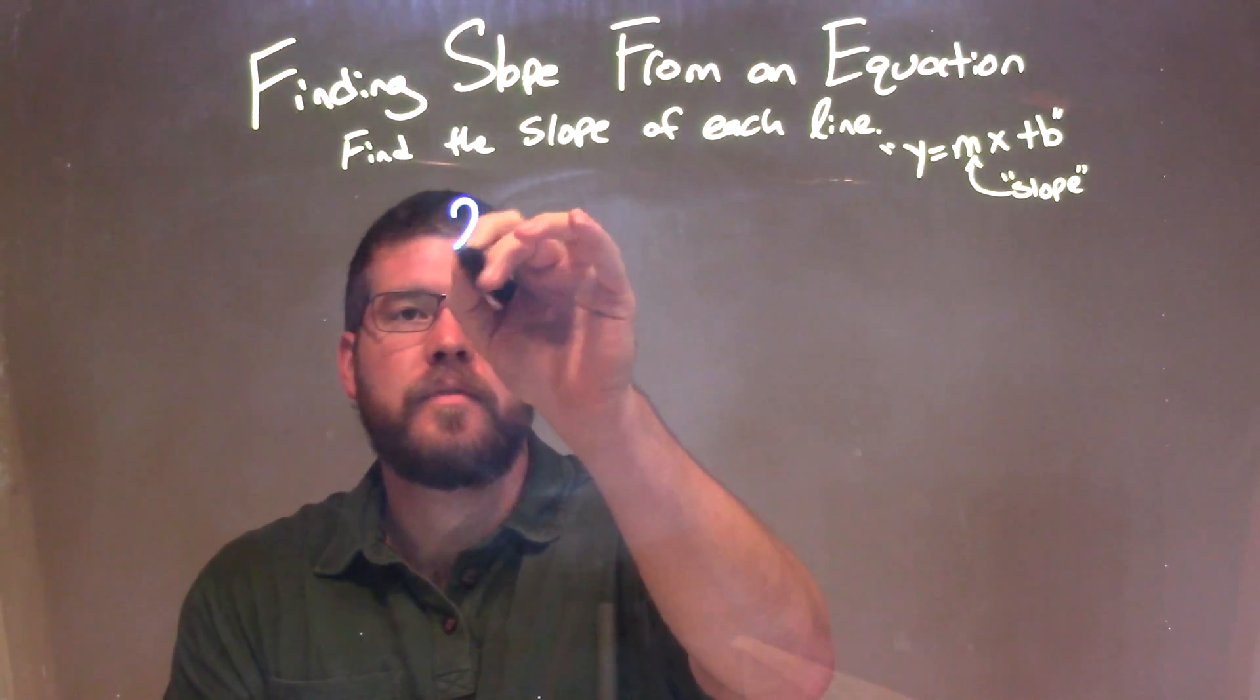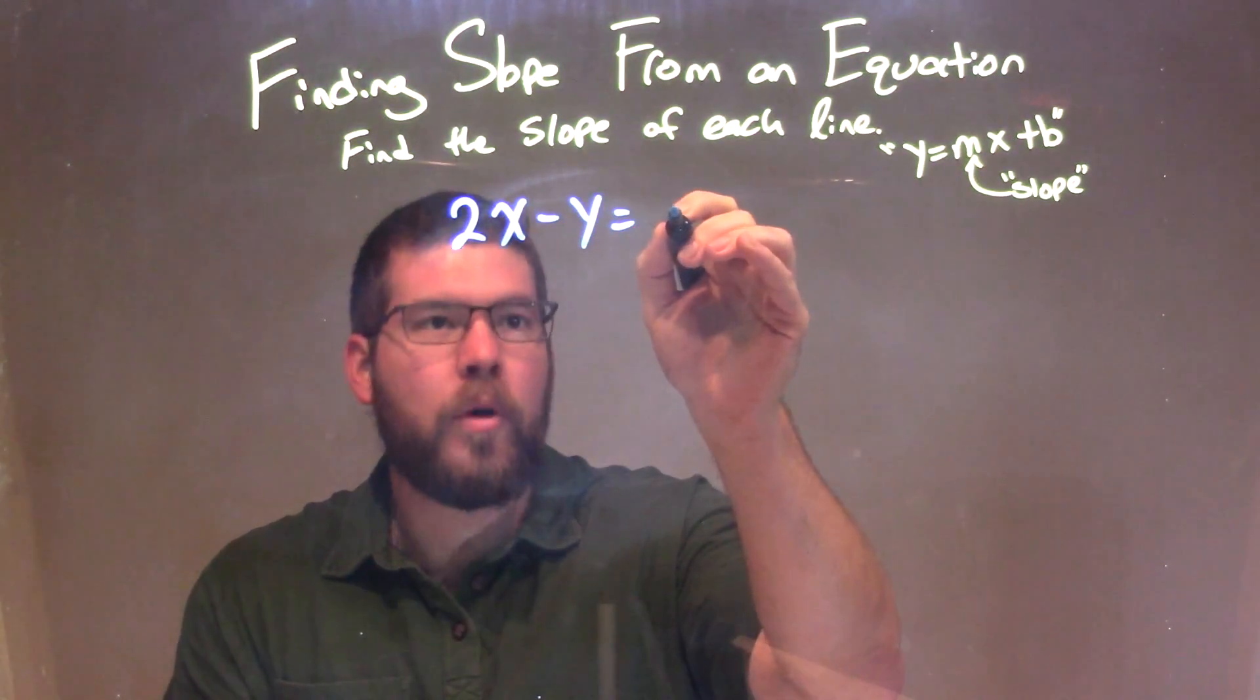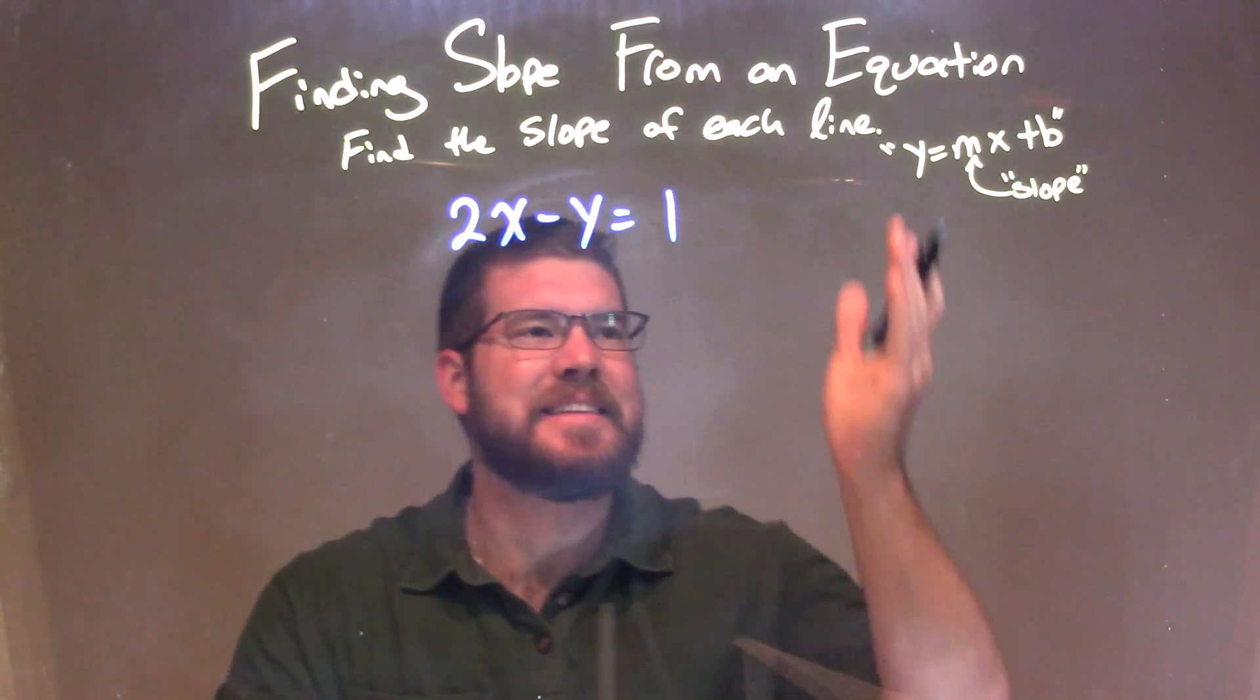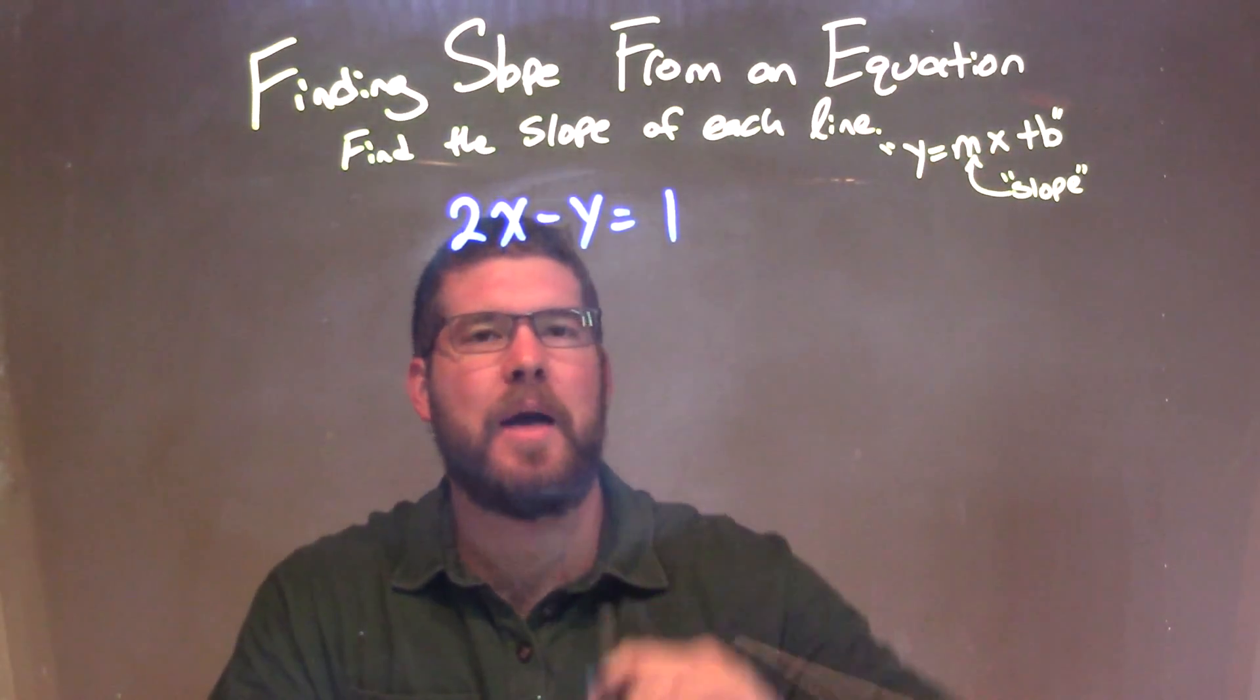If I was given this equation, 2x minus y equals 1, my goal here is to get y isolated. I need to have it in slope intercept form: y equals mx plus b.